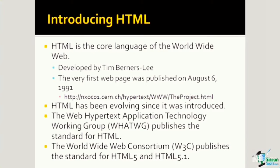HTML is a programming language, a scripting language, a markup language, and it is controlled by a standards body. That standards body for HTML is the Web Hypertext Application Technology Working Group, and they publish the standards. So if you're interested in reading the technical specification for HTML, it is available online. For HTML5 and future versions, the W3C will be publishing the standard.